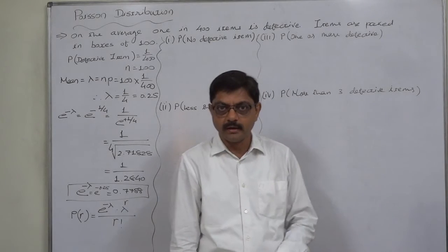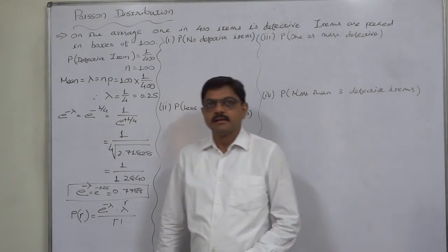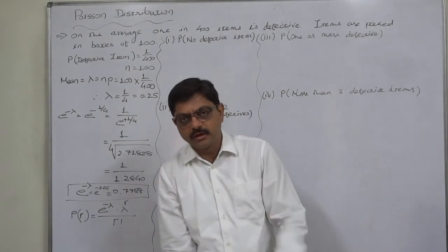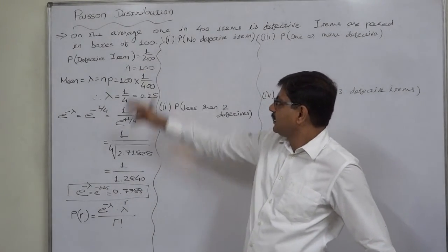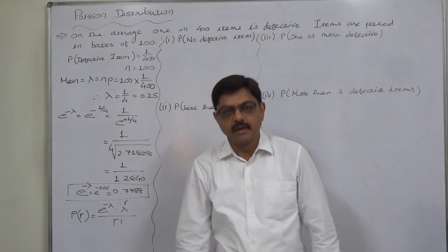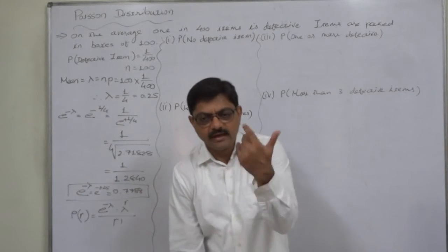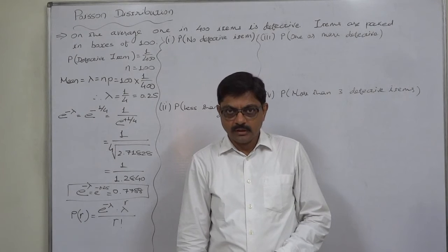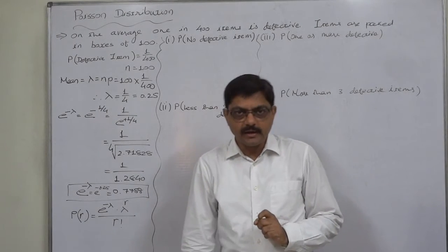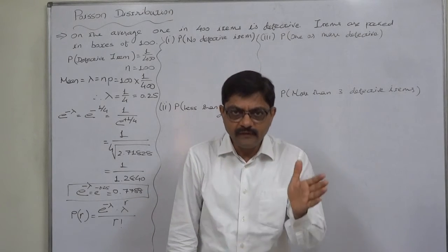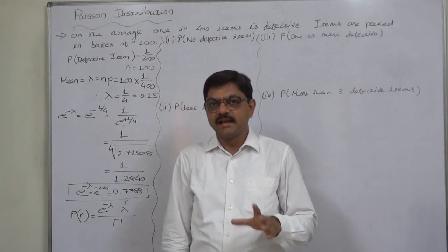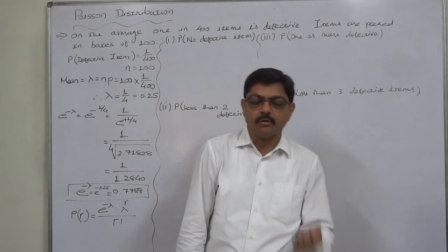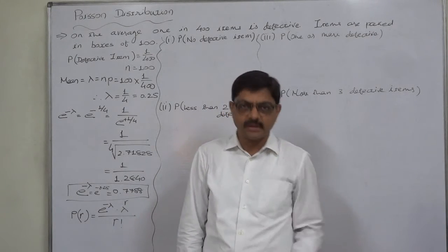We need to calculate the probability of defective items out of 100, not 400. In binomial distribution, n is 100 — not 400 — and n is sufficiently large, so we cannot use binomial distribution. Only 1 out of 400 is defective, meaning the ratio of defectives is very small, tending to 0. With so many trials and such a rare occurrence, the data follows a Poisson distribution.